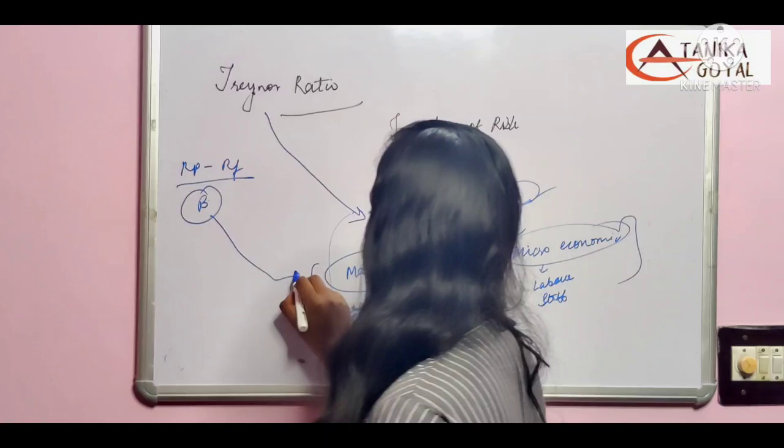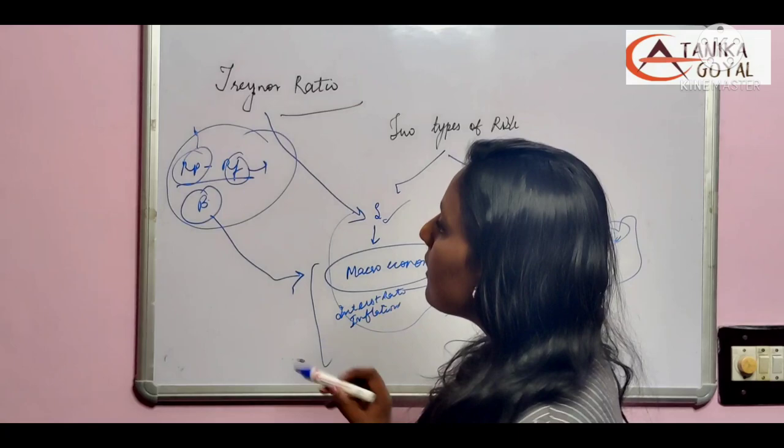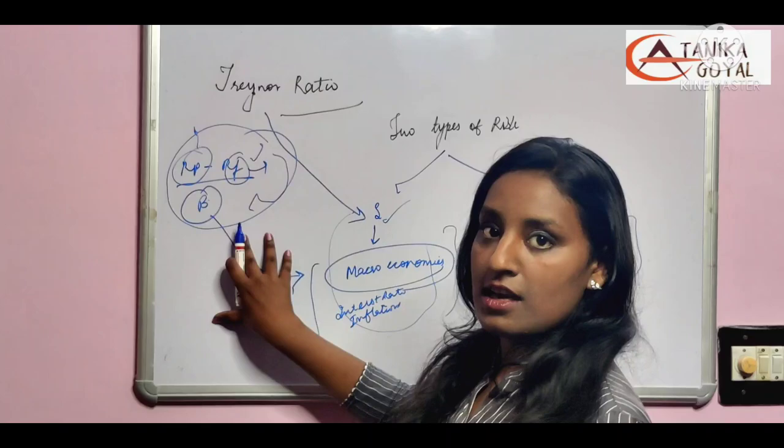Rp means every return of the portfolio and Rf means risk-free return. So we can derive our Treynor ratio. Treynor ratio is basically reward based on per unit of systematic risk. There is a third ratio that is called Jensen's alpha.